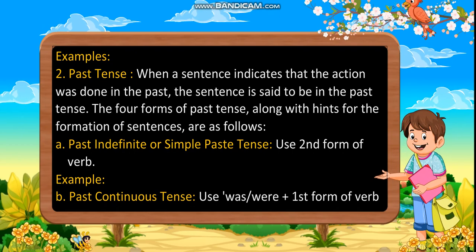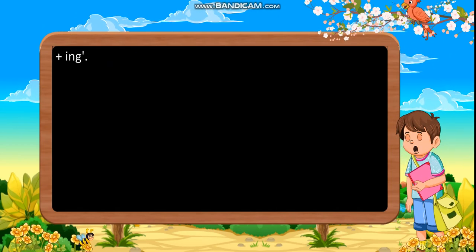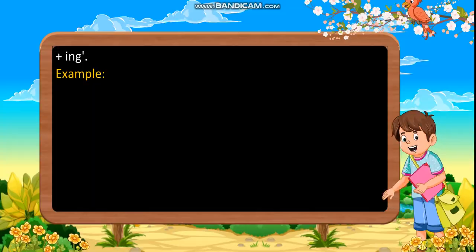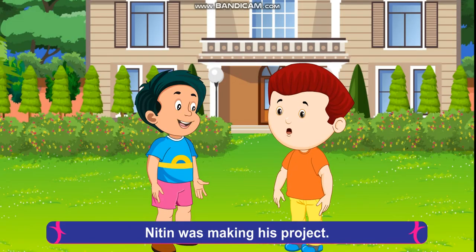Past continuous tense: Use was or were plus the first form of verb plus I, N, G. Example: Nitin was making his project.